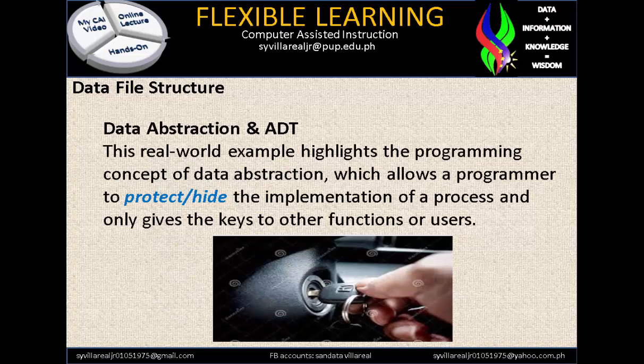Data abstraction and ADT, or abstract data type — this is a real-world example that highlights the programming concept of data abstraction, which allows a programmer to protect or hide the implementation of a process and only gives the keys to other functions or users. You will notice that the user has only their key, but the user doesn't know how the car works, because all of the things are hidden under the car body. The only thing the user can do is, of course, run the car.